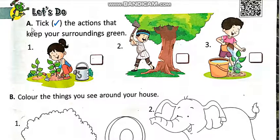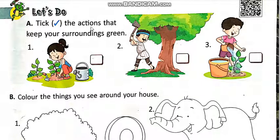Let's do A. Tick the actions that keep your surroundings green. Us action per tick lagayin jis se aapki surroundings green raha sakti hai. Actions mean kaam — us kaam per tick lagayin. Number 1.